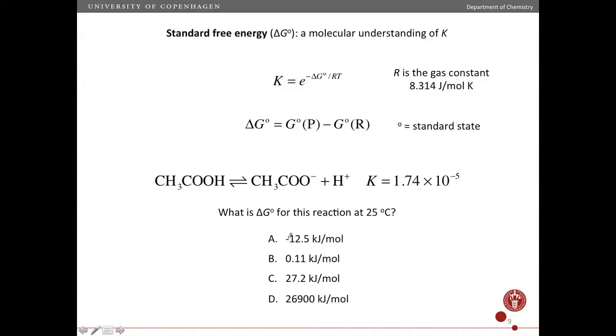If delta G standard is negative, right, then you have minus a negative number, so you'll get a positive number up here. And if you have a positive number up here in the exponent, then K will always be larger than 1, and K is smaller than 1.